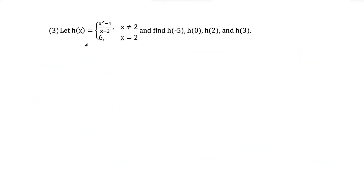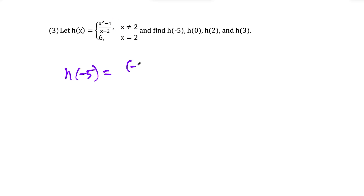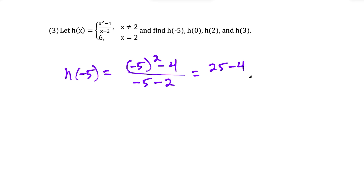Question three is our last question. This type of piecewise function is the not-equal-to/equal-to kind. For h of negative five, we ask: is negative five not equal to positive two, or is negative five equal to positive two? Negative five is not equal to two, so we plug into the top row: negative five squared minus four over negative five minus two, which gives us 25 minus four over negative seven, then 21 divided by negative seven, which is negative three.